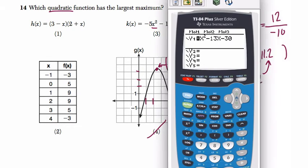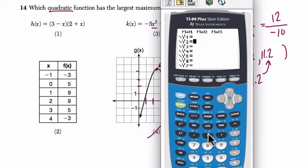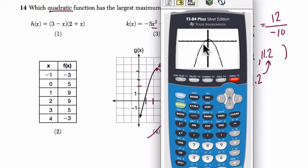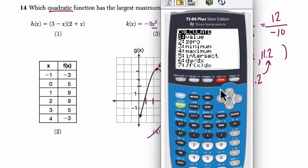So I'm going to press y equals, and then enter this function directly. So it's going to be 3 minus x, close parentheses, times 2 plus x, close parentheses, graph it. And I happen to see my function. You can even do zoom 6 to see a zoom standard a little bit closer. Now I want the maximum value here. I hit second, trace. And I'm interested in choice 4, the maximum.